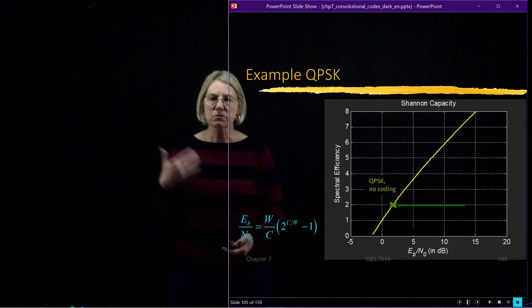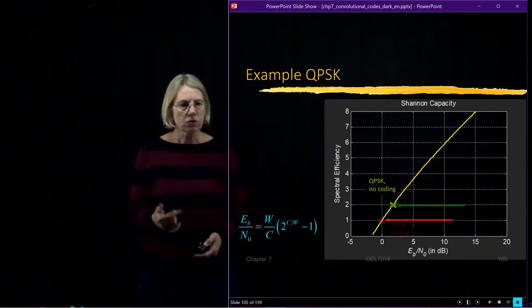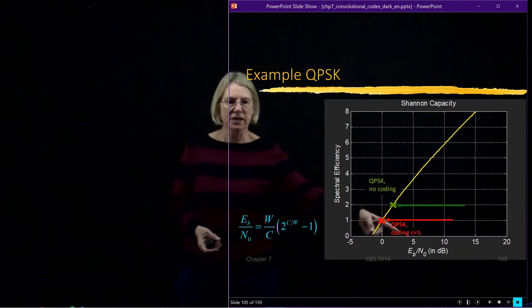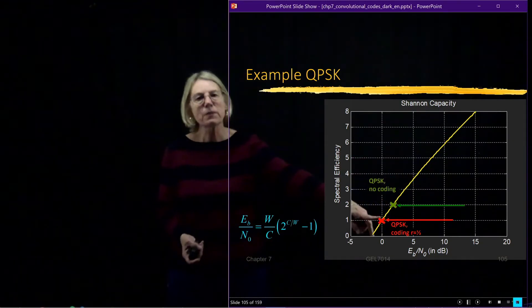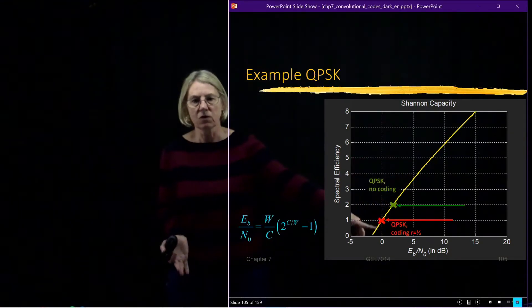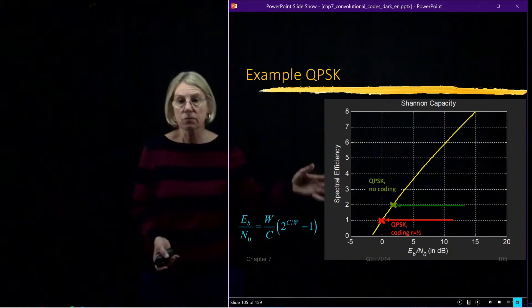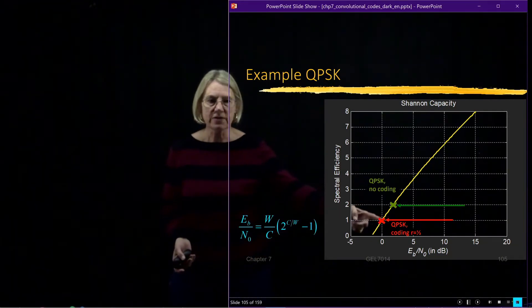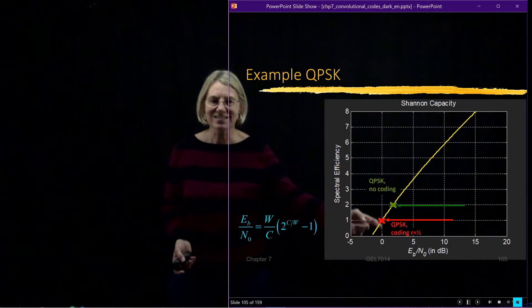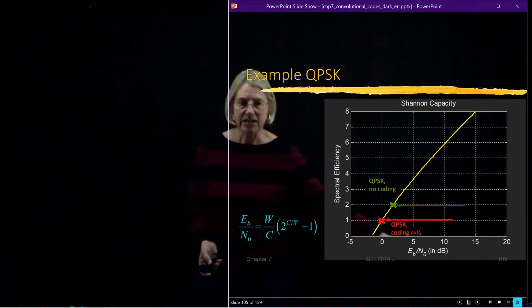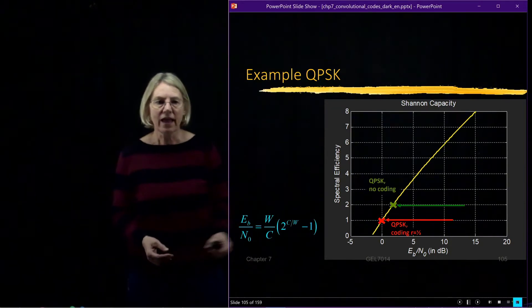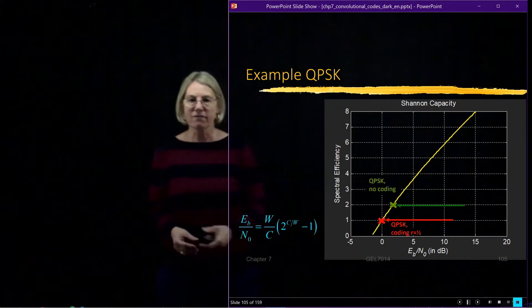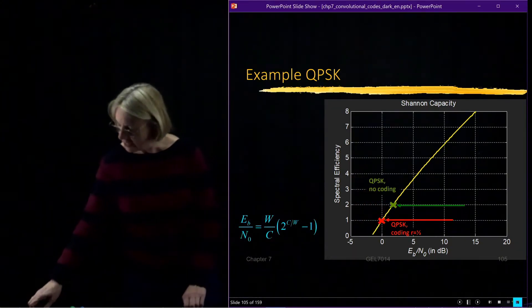If I use a forward error correcting code, I'm going to look at an example with a rate one-half code, which means the best spectral efficiency I could get would be one bit per second per hertz for this QPSK. But what I'm going to show you is I can get really close to this zero, actually have noise just as high as my signal, and still be able to have good communications.